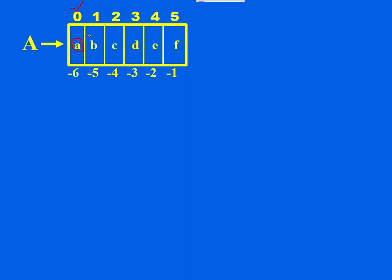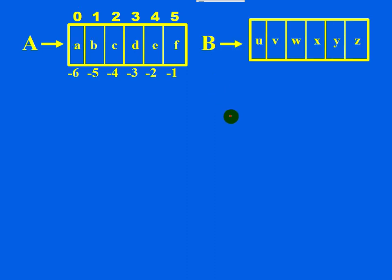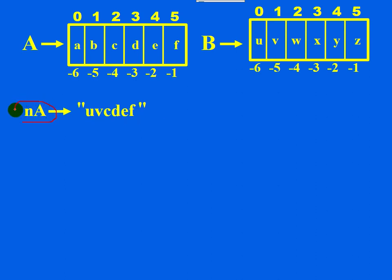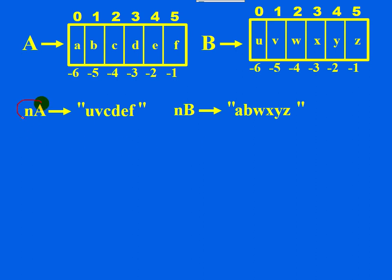B points to the string UVWXYZ with its own forward and backward indexing. I need to calculate new A and new B. New A equals the first two characters of B, concatenated with the remaining characters of A — excluding the first two characters of A. How do you get the first two characters of B? By using string slicing.